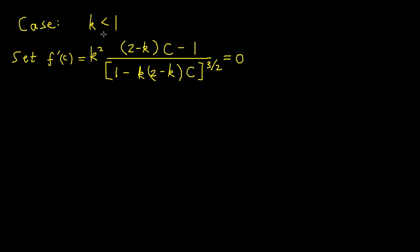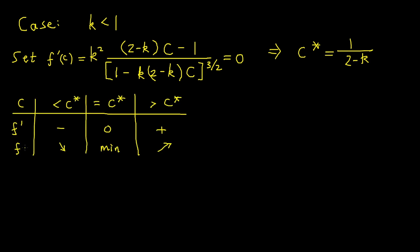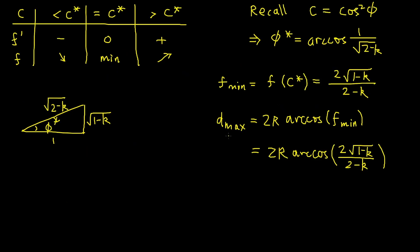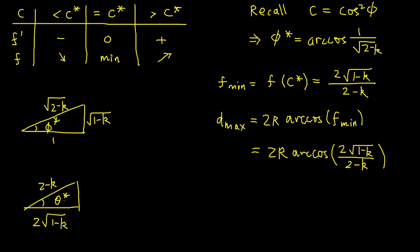Case 2: k < 1. Here f′ can be both positive and negative. Setting f′ = 0 gives the critical point c* = 1/(2 − k). By analyzing the sign of f′, f is minimized at c*. This corresponds to the optimal launch angle φ* = arccos(1/√(2−k)). The maximum range is d_max = 2r · arcsin(k / √(2−k)), which can be visualized using a right triangle where the opposite side of θ* is k.